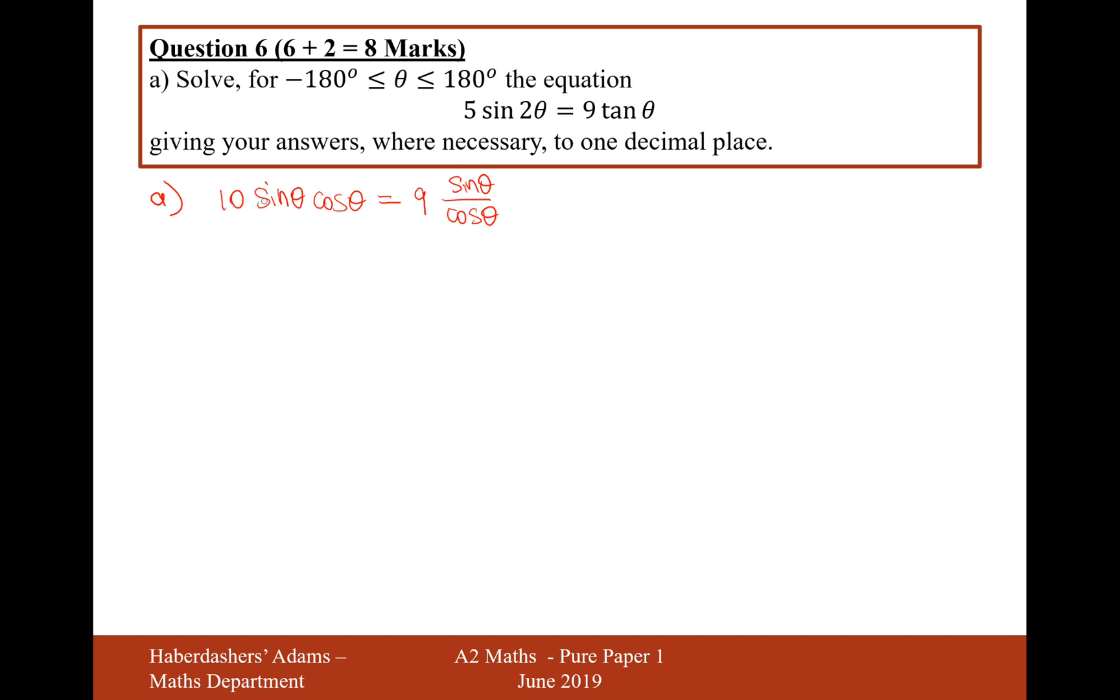The next thing I'll do is I'll times by cos onto the other side. So that would be 10 sin θ cos² θ equals 9 sin θ. The next thing I'm going to do is turn cos² into 1 minus sine squared. So it would be 10 sin θ times (1 minus sin² θ) equals 9 sin θ.